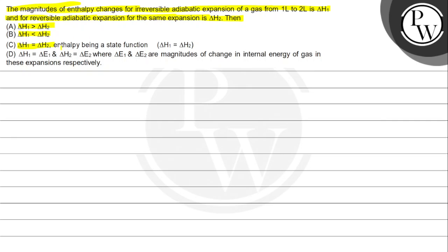The fourth option is: enthalpy being a state function, delta H1 is equal to delta H2. And the last option is delta H1 is equal to delta E1, and delta H2 is equal to delta E2, where delta E1 and delta E2 are the magnitudes of change in internal energy of the gas in these expansions respectively.